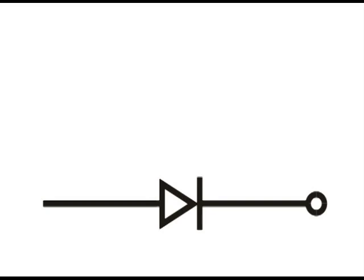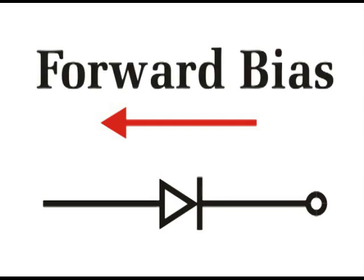Here's the symbol for a diode, and this arrow is showing the direction that electrons will flow, and when that happens that's known as forward bias. And note the polarity where the negative and the positive is.